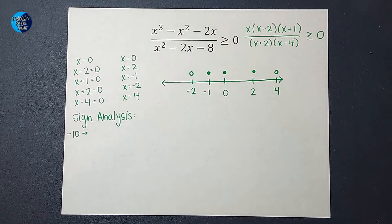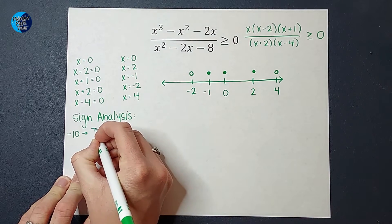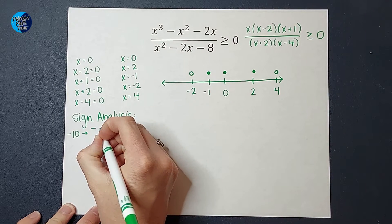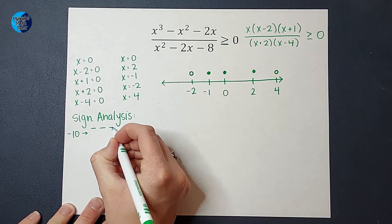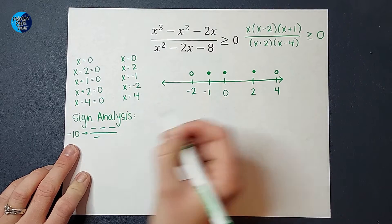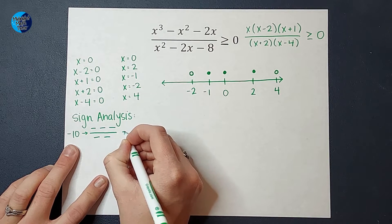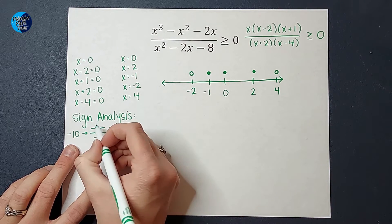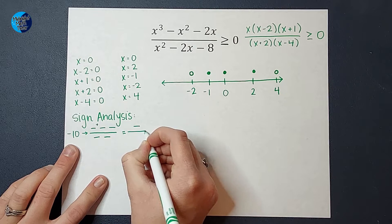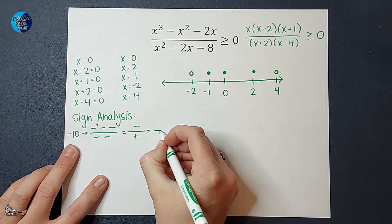If I plug in negative 10, I'm not too concerned about what the number answer is, just if it's positive or negative. Negative 10 is negative. Negative 10 minus 2 is also negative. Negative 10 plus 1 is also negative — that's my numerator. Negative 10 plus 2 gives a negative. Negative 10 minus 4 also gives a negative. On top: negative times negative is positive, times negative is negative. On bottom: negative times negative is positive. Negative divided by positive is negative.